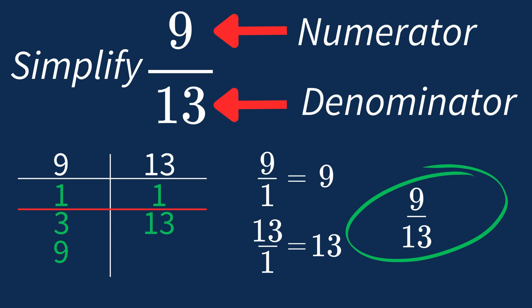In future, if the largest common factor is 1, you know that fraction is already in its simplest form.